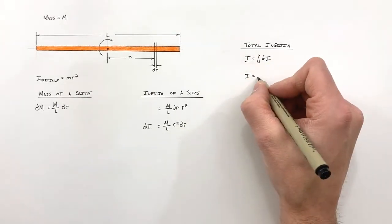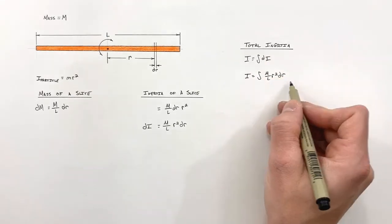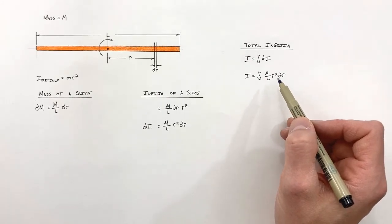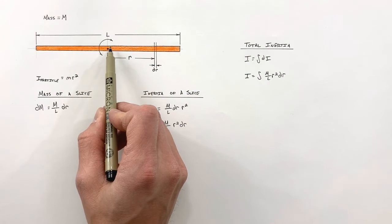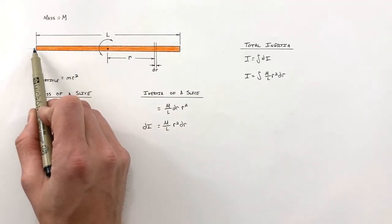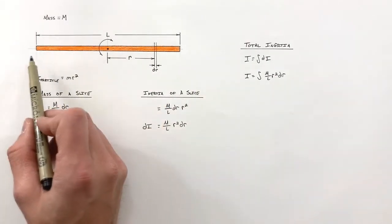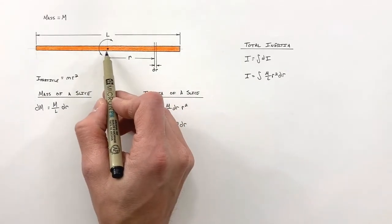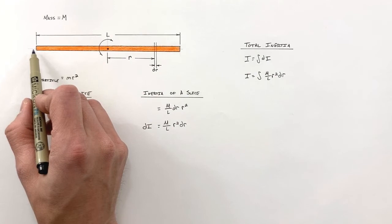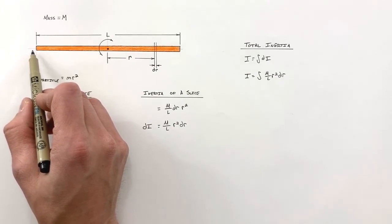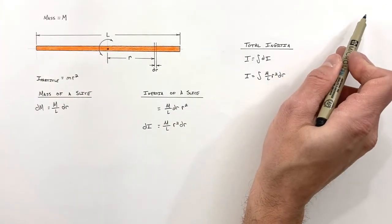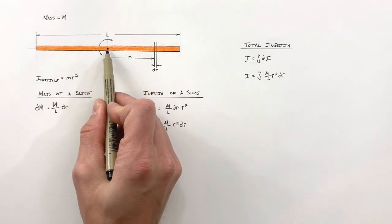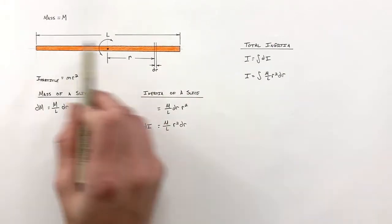Expanding out our term for dI, we get the integral of (M/L)r²dr. You'll notice everything so far is exactly the same as if we were deriving the rotational moment of inertia for a rod rotating around its end or any other point. What we need to do is differentiate the case where we rotate around the center from the case where we rotate around the end.